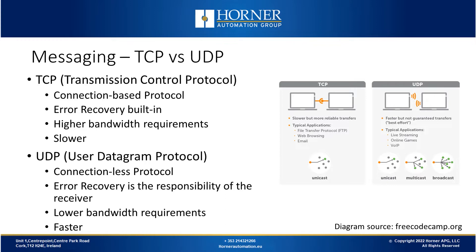TCP is a unicast-style connection where it's strictly one device talking to one other device. UDP, or User Datagram Protocol, is a connectionless protocol, so two devices can start communicating straight away. Error recovery is not built into UDP — it's the responsibility of the receiver. Because there aren't extra bytes affiliated with retries, it has lower bandwidth requirements, making it technically faster.